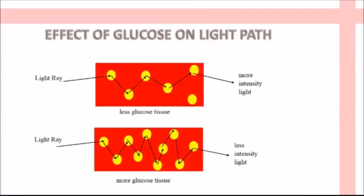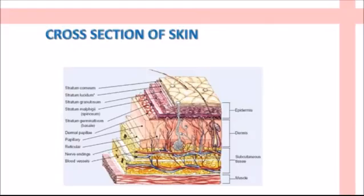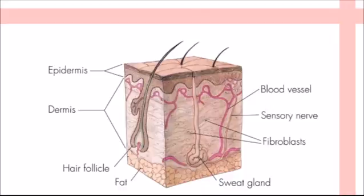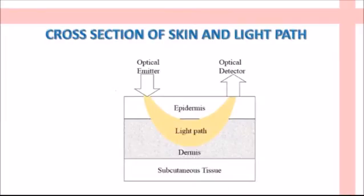Consider two tissue samples — one with a low glucose level and one with a higher glucose level. Basically there are three layers of skin: epidermis, dermis, and subcutaneous tissue. In the dermis, capillaries are present and optical rays reach up to the capillary level. From the thin capillaries in the dermis, we can analyze glucose concentration in the blood.